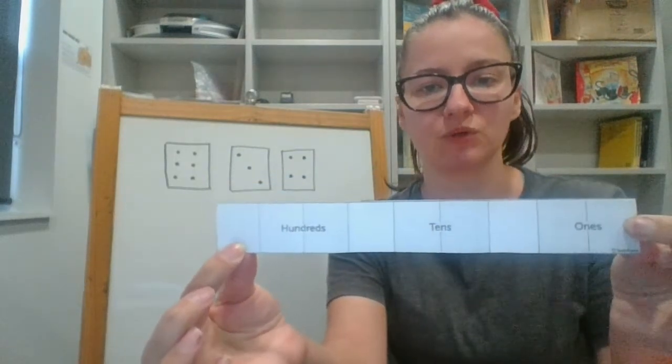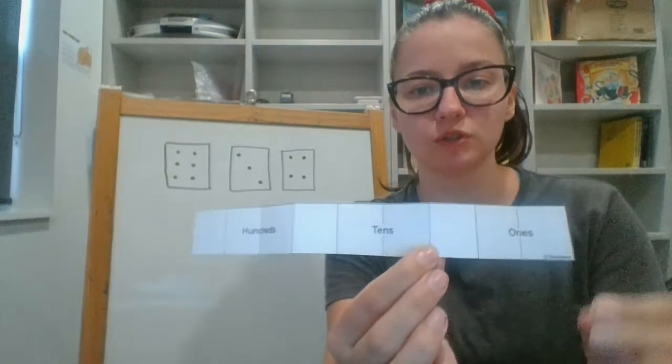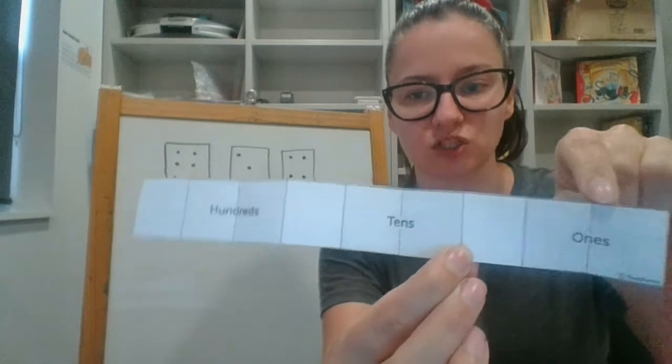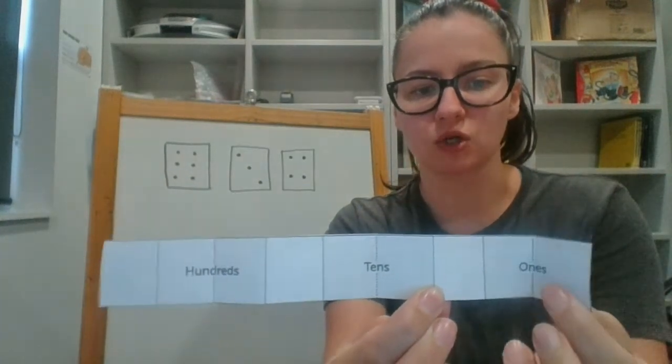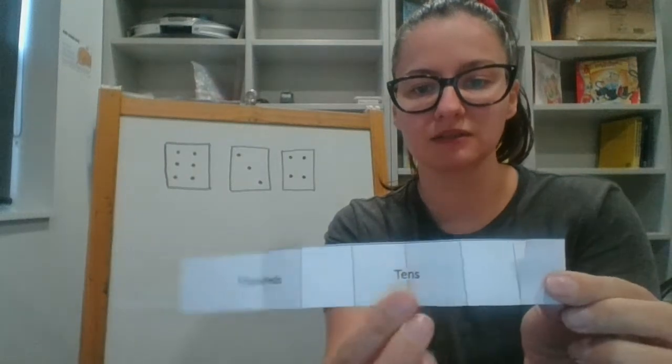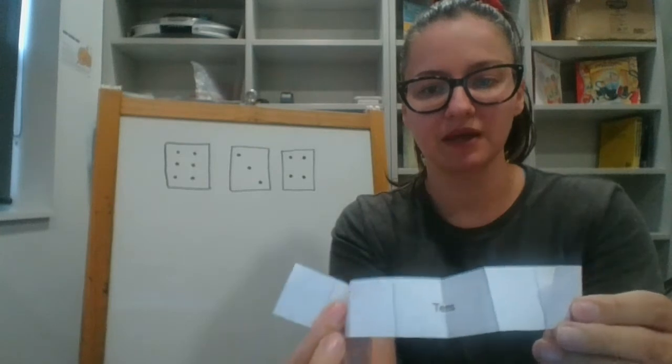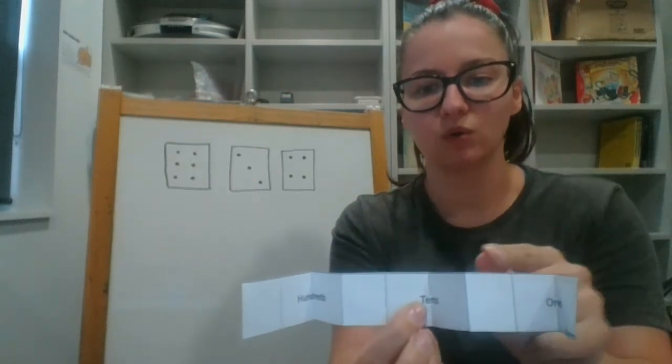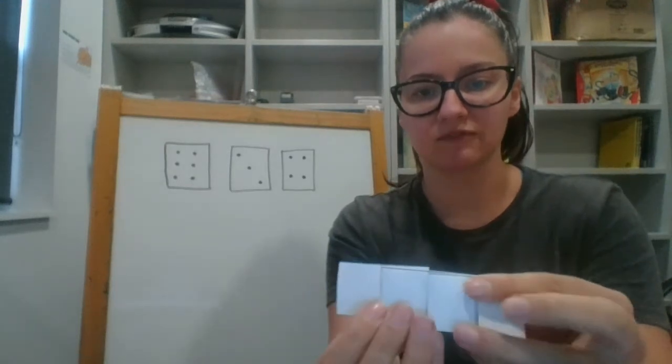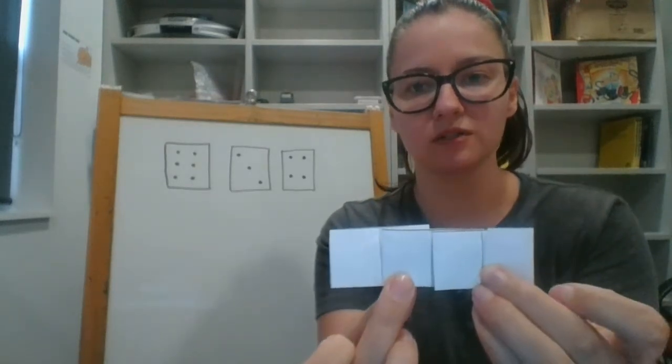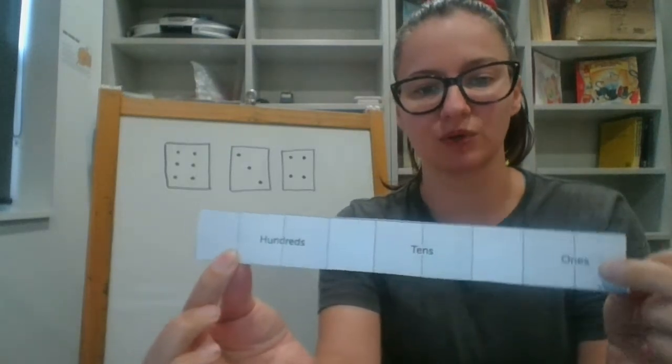The next step that we need to do is fold our number expander. On the expander you've got two types of lines: dotted lines and solid lines. We're going to fold the dotted lines backwards like this so they come backwards, and on the solid lines we're going to fold them forwards. So when your number expander is folded, the words should be hidden, and when we stretch it out we can see the words again.